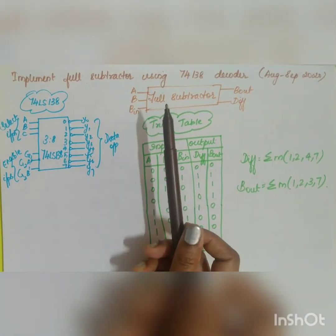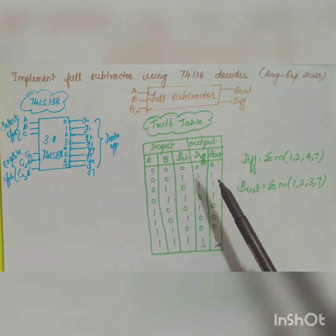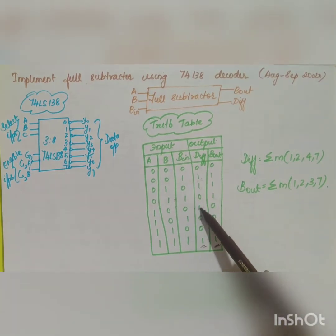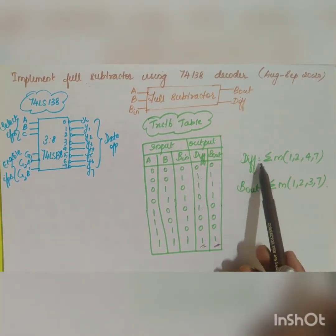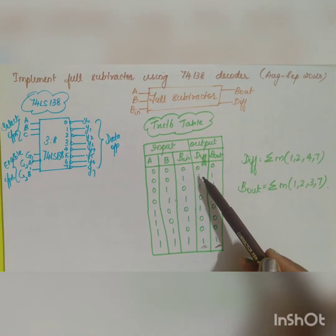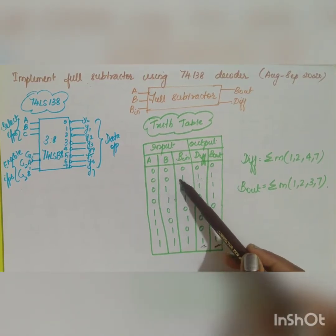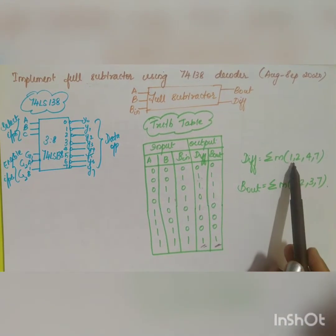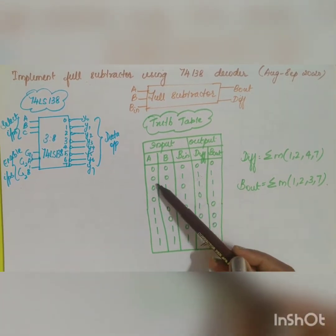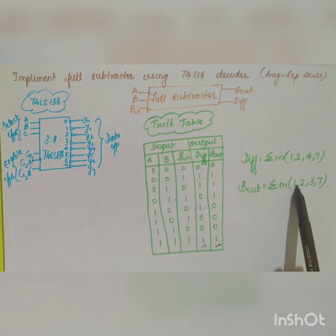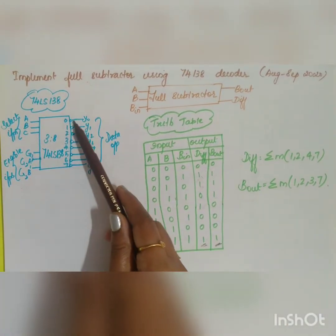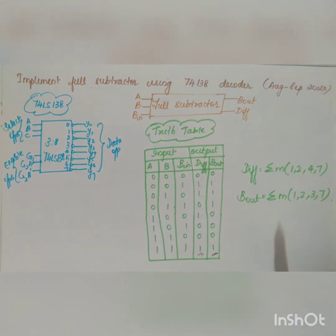To implement the full subtractor using a decoder, the outputs are expressed in sum-of-product (SOP) terms. Difference = Σm(1, 2, 4, 7) — wherever the Difference output is 1. Similarly, Borrow-out = Σm(1, 2, 3, 7) — wherever the Borrow-out output is 1. Once these expressions are obtained, they can be implemented using the 74LS138.